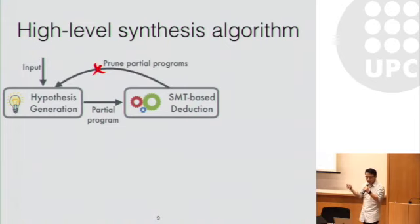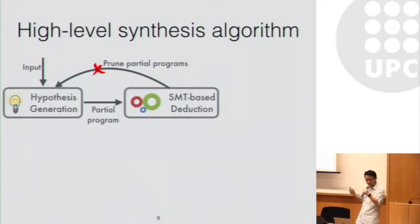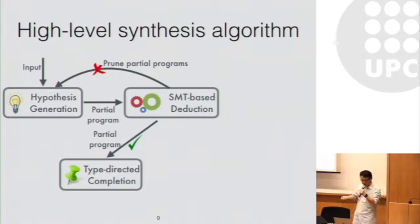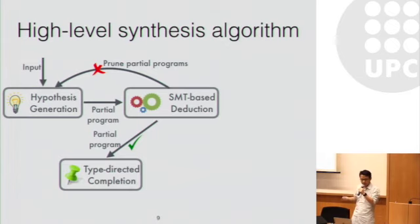If the SMT reasoning engine says no, Morpheus will dramatically prune the search space because each hypothesis represents many concrete applications. On the other hand, if the SMT reasoning engine says yes, our system will keep going and complete the partial program in a type-directed manner.